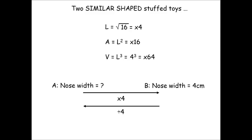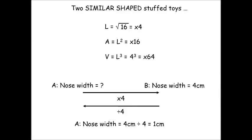This time though, we're going from the big shape to the small shape, so rather than multiplying the distance by 4, we'll have to divide it by 4. This gives us a nose width of 1 centimeter on the smaller toy.